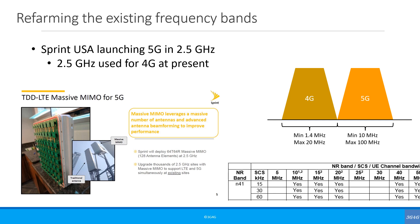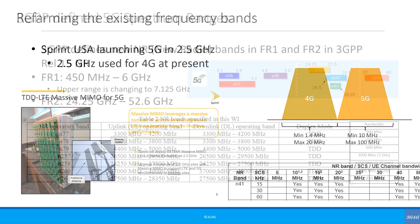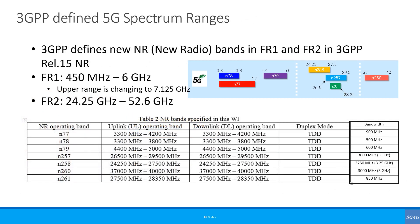Sprint is another US operator that is looking to re-farm some of their 2.5 GHz spectrum for 5G. This spectrum is heavily used today for 4G. Looking at all the new bands that were defined just for 5G, the bandwidth available from the bands is quite large but that does not mean each country will allocate large chunks of spectrum to the operators. We will look at a few examples in a minute.